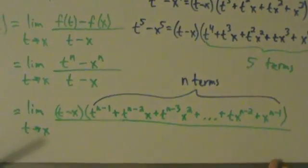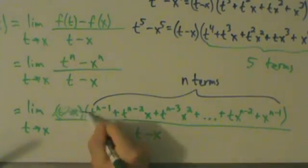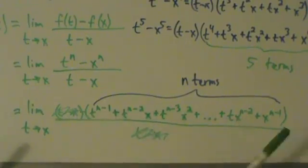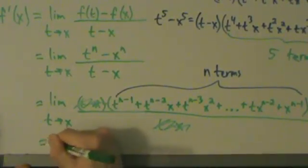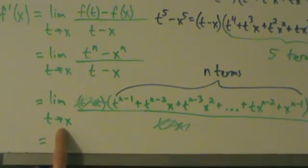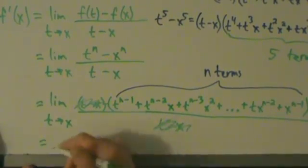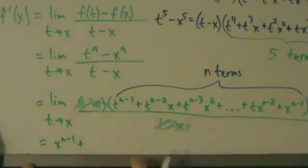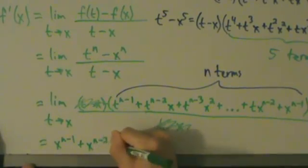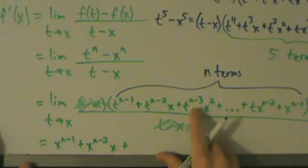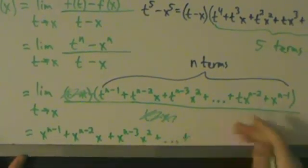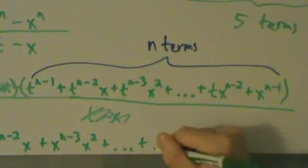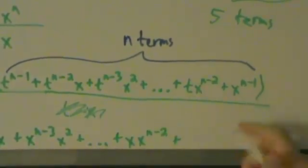This is good because the t minus x on the bottom cancels with the t minus x we factored out. All we have left is the limit of the remaining expression. Now we can do direct substitution — the limit as t goes to x just means replace every t with an x. So the first term becomes x to the n minus 1. The second term, t to the n minus 2 times x, becomes x to the n minus 2 times x. The third term becomes x to the n minus 3 times x squared. And continuing the pattern, the second to last term becomes x times x to the n minus 2, and the last term is just x to the n minus 1.